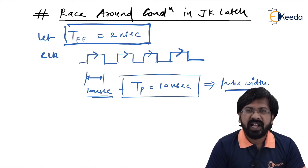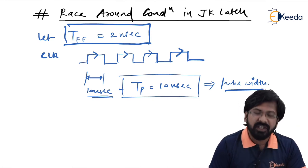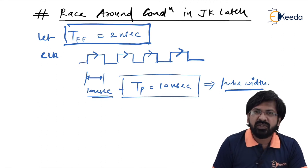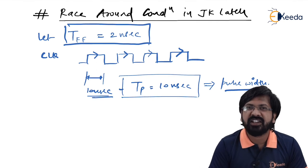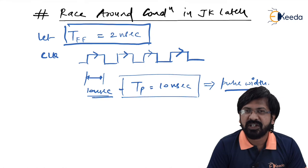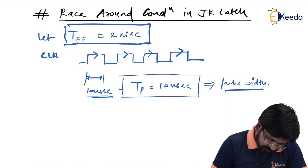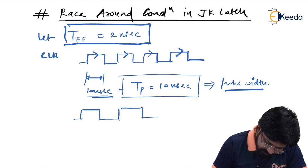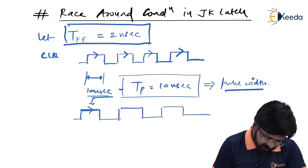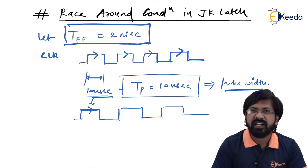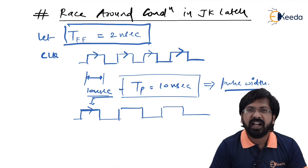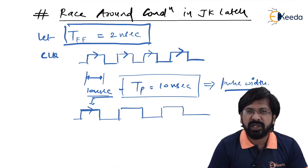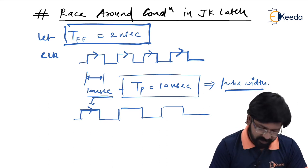The output of this latch will keep toggling during the entire positive level. Since the duration is 10 nanoseconds and the latch toggles every 2 nanoseconds, it will get toggled 5 times in a single clock cycle. During the 10-nanosecond window, the latch has freedom to toggle, and how many times it toggles depends on the propagation delay. With 2ns delay and 10ns freedom, it toggles 5 times.